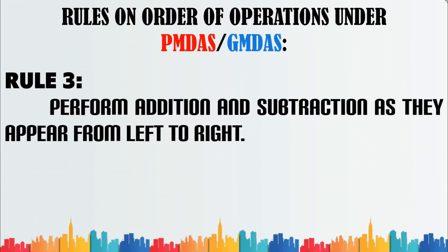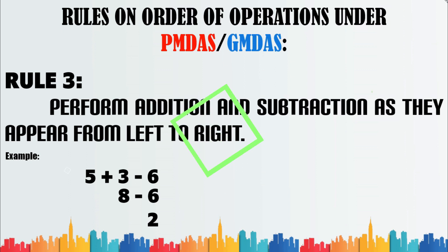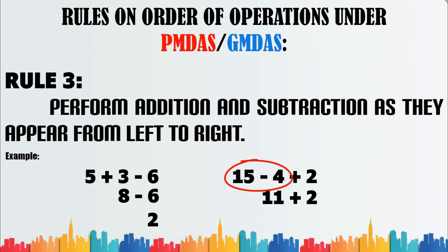Rule number three: perform addition and subtraction as they appear from left to right. Example: 5 plus 3 minus 6 — we first add 5 and 3 before proceeding to subtraction. Another example: 15 minus 4 plus 2 — we first subtract 4 from 15 before proceeding to addition.